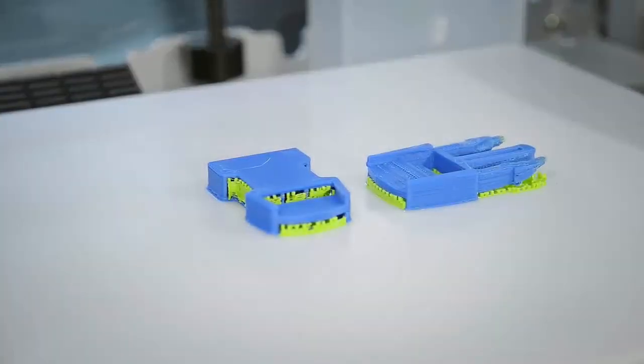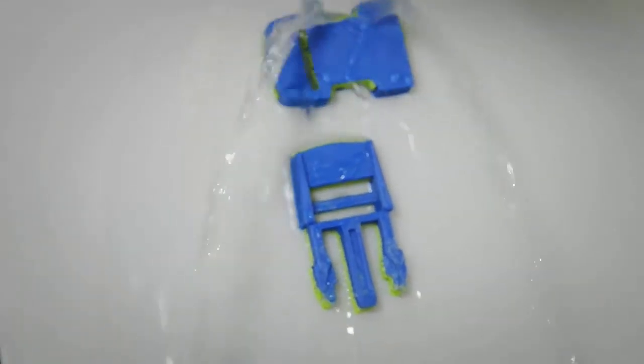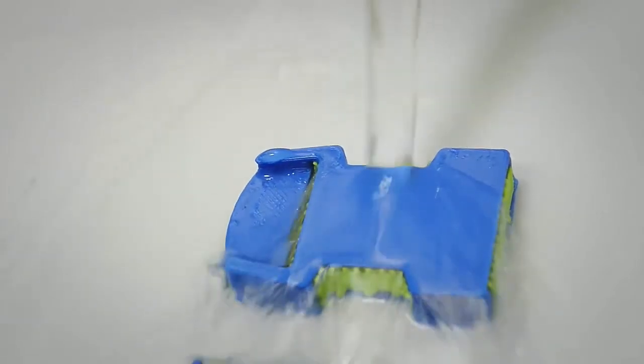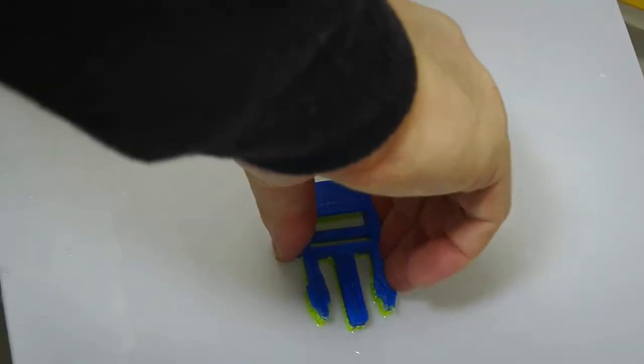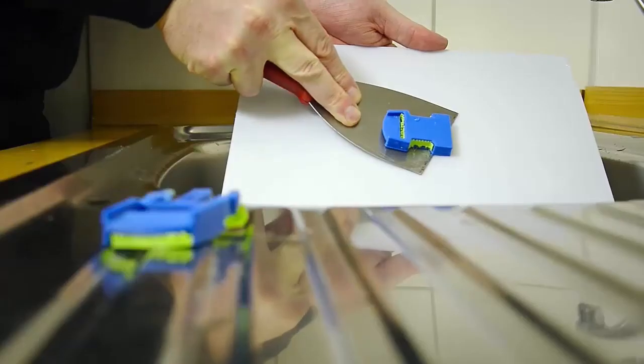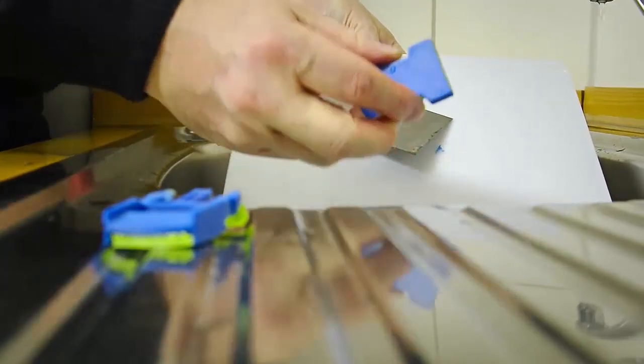With the Cube Pro Trio, post-processing requires removal of the glass build plate, and then to release the parts, you need to run under warm water for approximately two minutes. Peeling by hand and using the scraper to ensure the model is removed, as well as all the support material is removed from the plate.